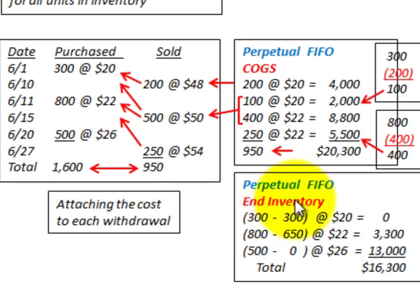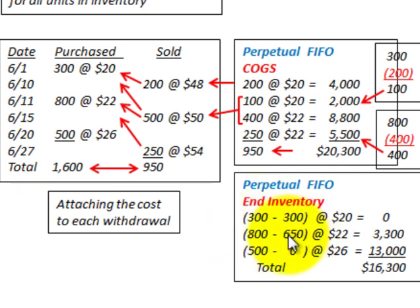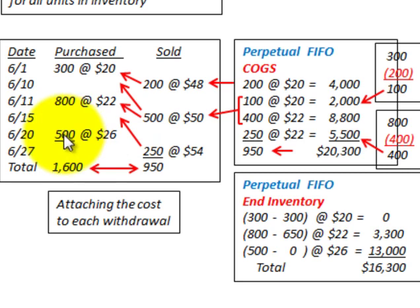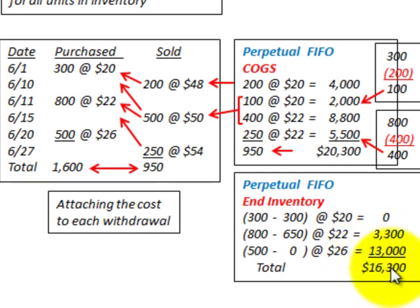Looking at our ending inventory for perpetual FIFO: we used the total oldest amount of 300 units at $20 a piece, so none remain in ending inventory. For the next 800 units, we used 650, leaving 150 remaining at $22 a piece — that's $3,300. And the 500 units originally purchased, the newest quantity, we didn't use any of those, so 500 at $26 a piece equals $13,000. Total ending inventory is $16,300.